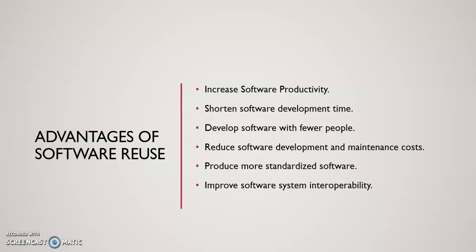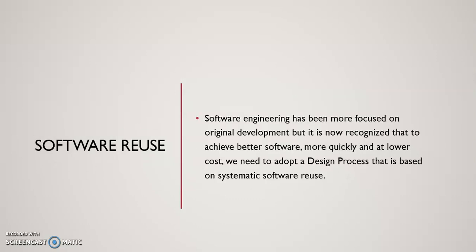Improving software system interoperability means multiple modules can be created; modules which are already implemented just need changes, and interoperability between softwares can be achieved. In software reuse, software engineering has been more focused on original development, but it is now recognized that to achieve better software more quickly and at lower cost, we need to adopt a designing process based on systematic software reuse. When the design process is perfectly implemented, you can code according to that design.